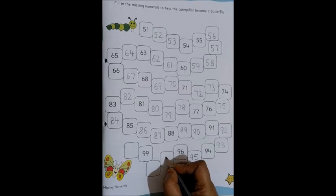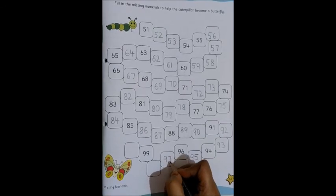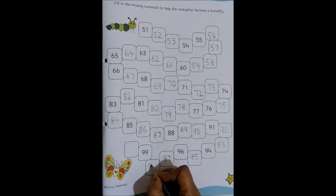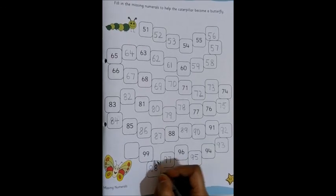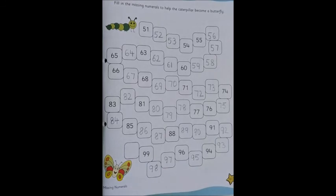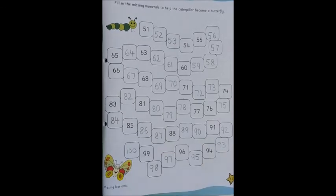94 is already there. Then what will come? 95. 96 is already there. Then what will come? 97, 98, 99. And the last number is 100.